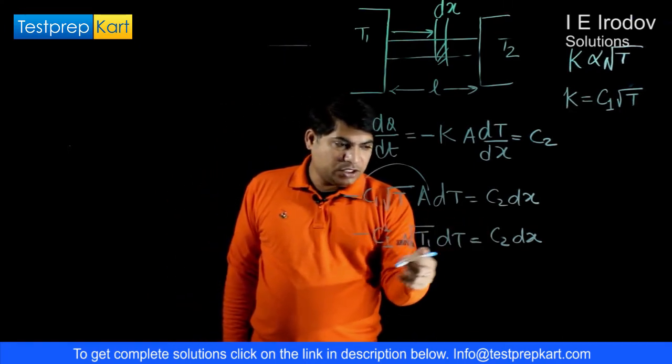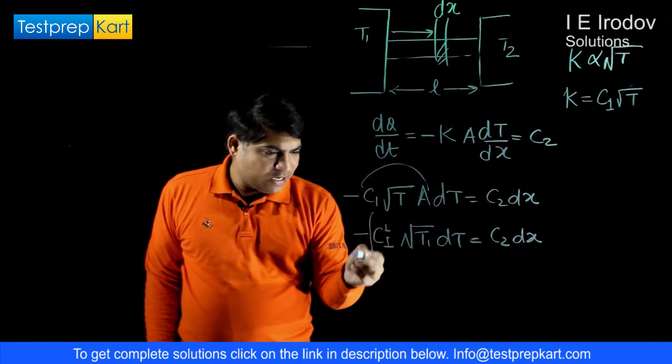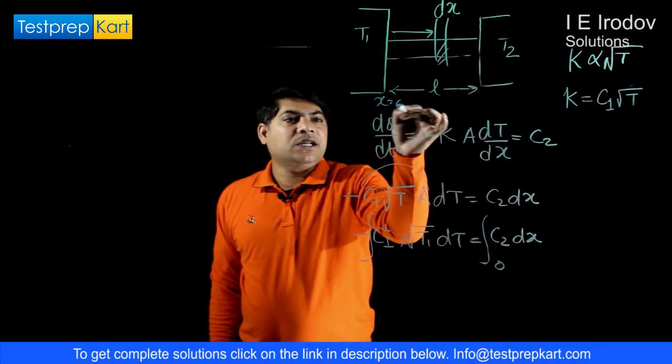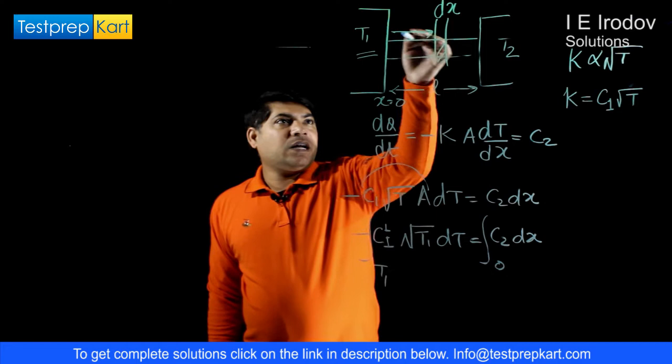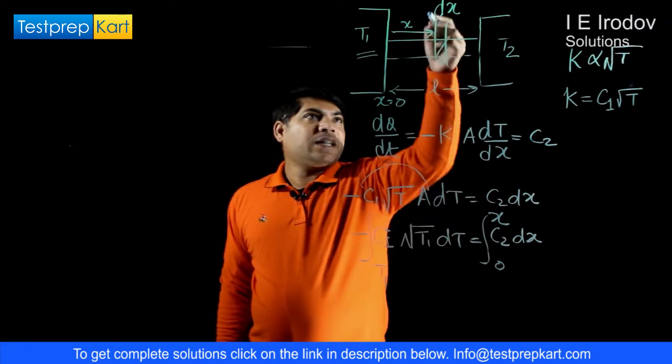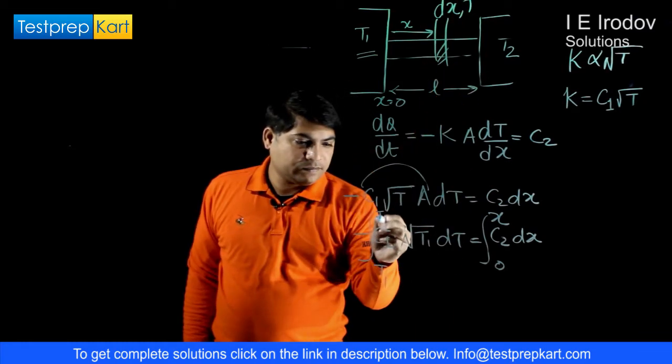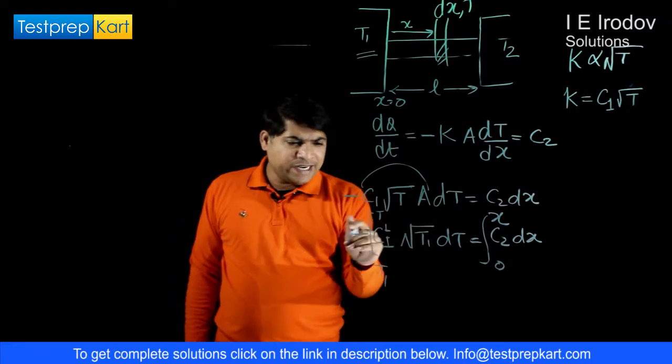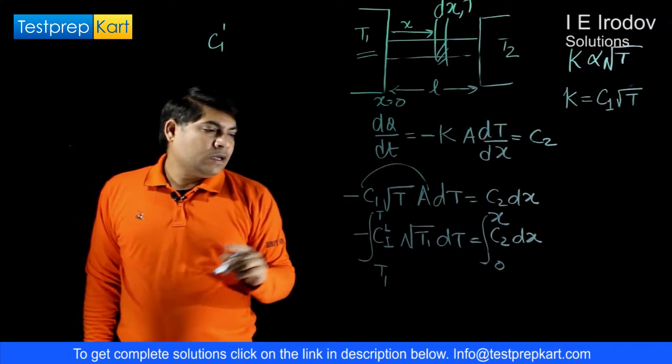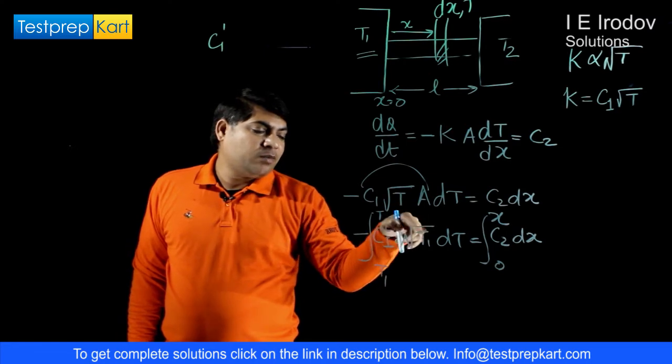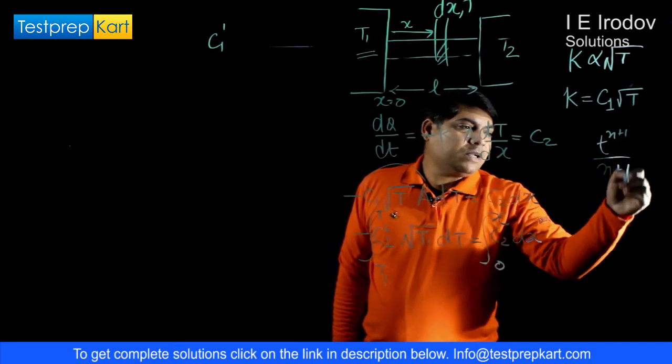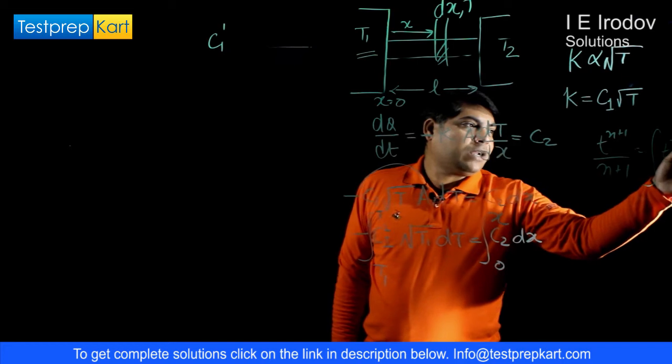Now we will integrate these two equations. When x is equals to 0, that means this point. When distance is any general value x, then for that let us take temperature at this point is T. We will integrate these two terms, this constant would remain here. Root T, it means T to power 1 by 2. As per integration we apply T to power n plus 1 over n plus 1.